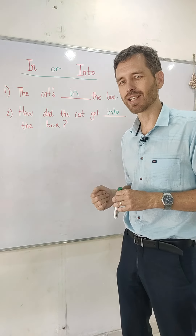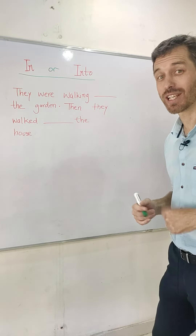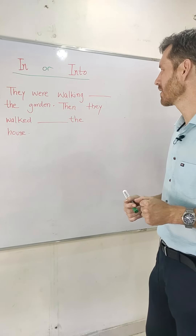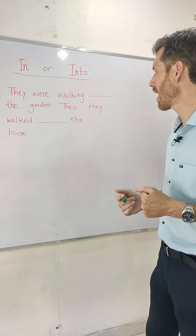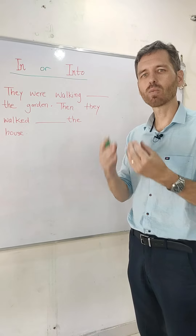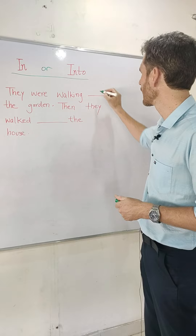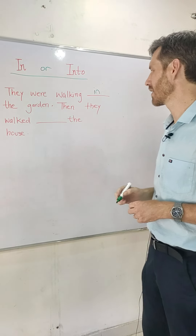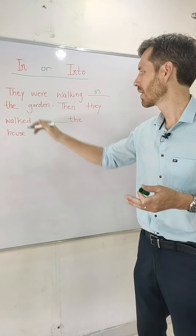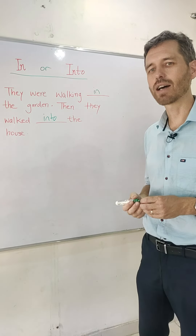Let's have a look at the next example. Here is another opportunity to practice. They were walking blank the garden. Then they walked blank the house. Which one is stationary and which one implies movement? Well, first, they were walking in the garden. And then, after that, they moved from the garden to the house — they walked into the house.